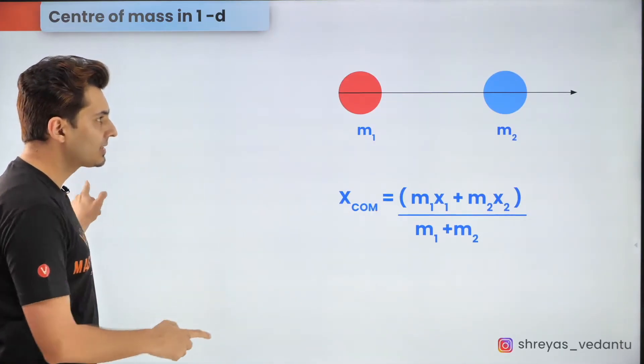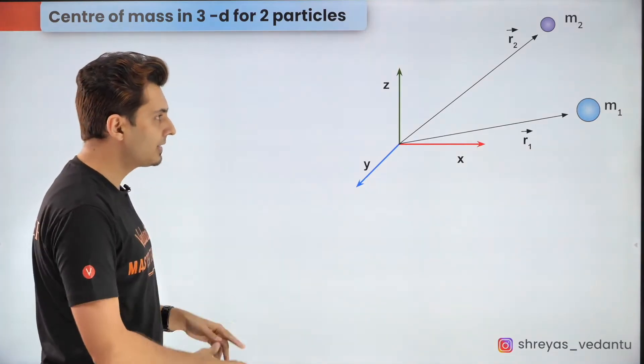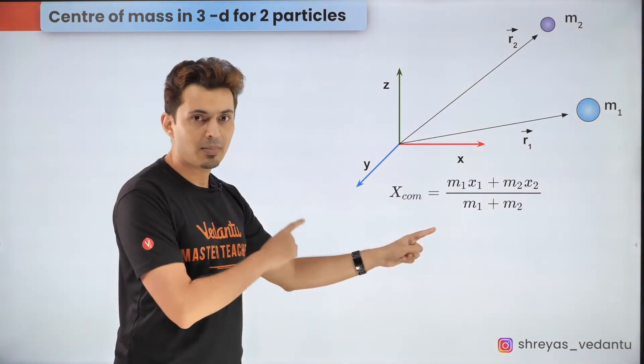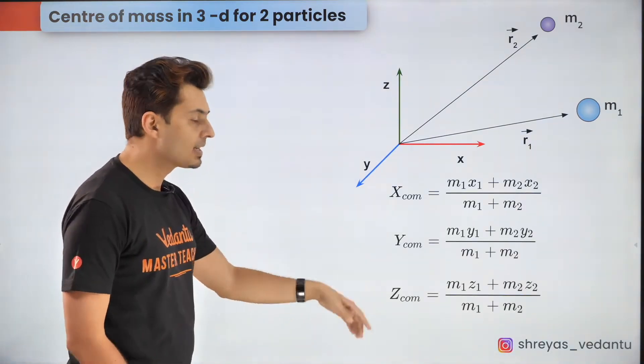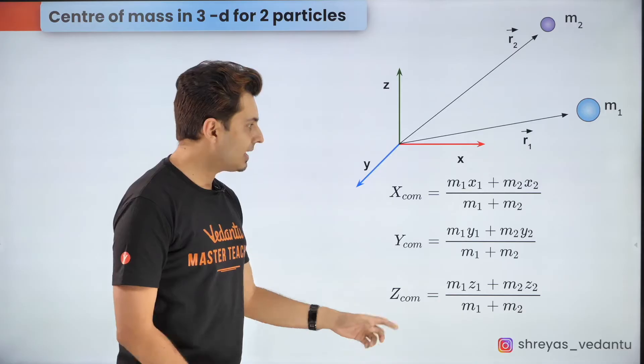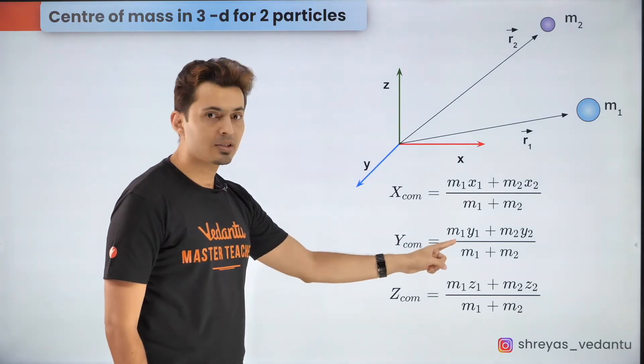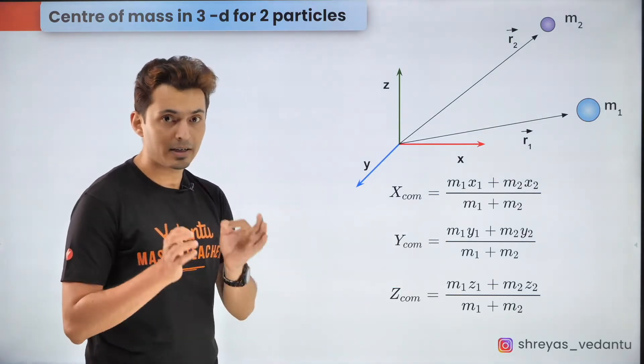Now if the same objects are present in a 3D space then the x coordinate formula remains the same as before. The y and the z coordinate formulas are similar just that the x terms get replaced with y or their respective z coordinates.